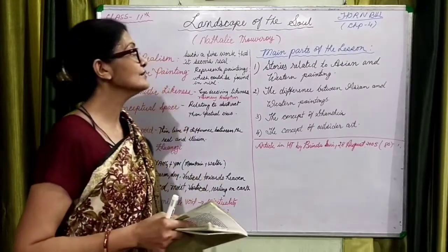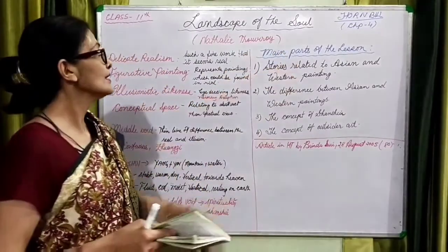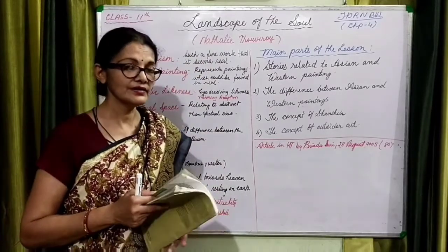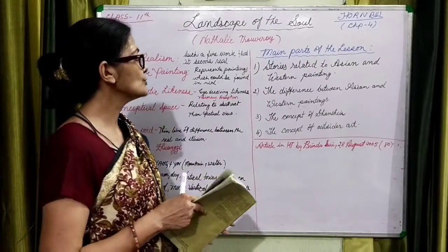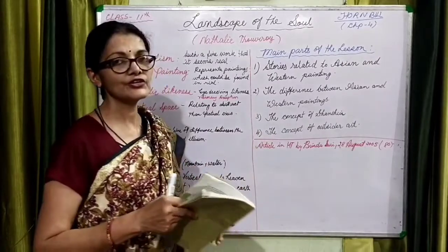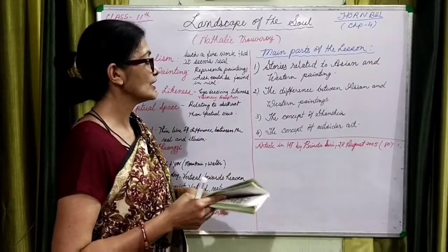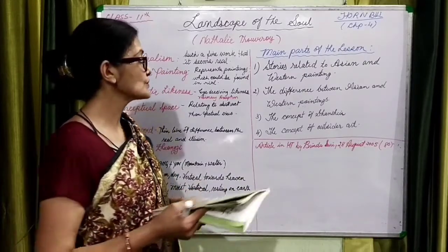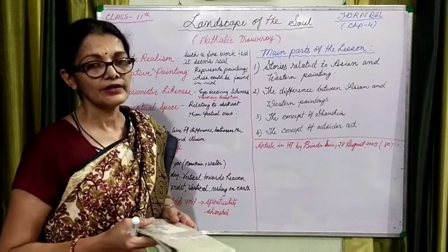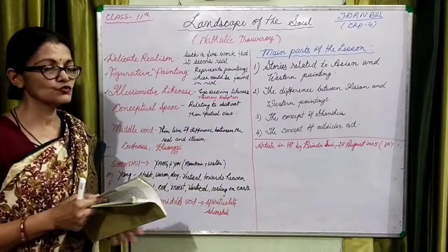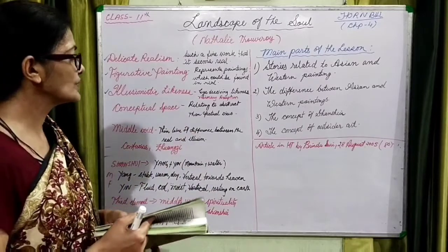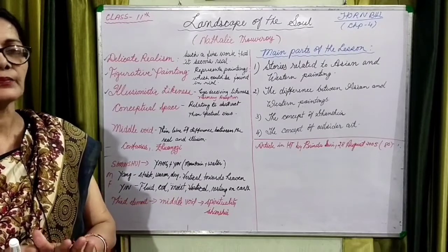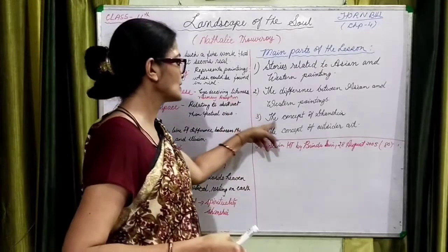Hello children, I am back again with Chapter 4 of Hornbill, and the name of this chapter is 'Landscape of the Soul.' As we learned in the last video, we learned about differences between Asian and Western painting. We heard three short stories related to Chinese and Western painting. Now in this video, we are going to learn the second part of the chapter.